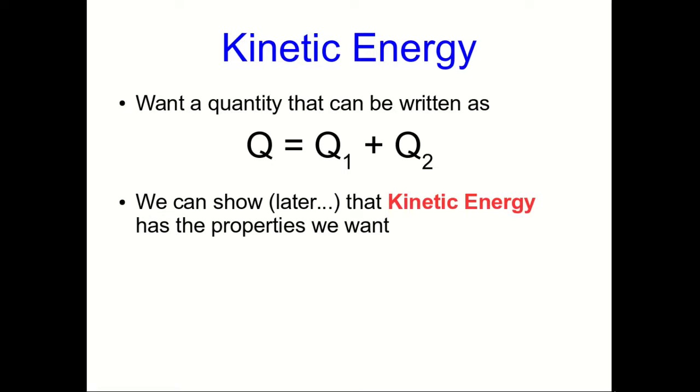Well, we're going to show later that this thing called kinetic energy has all the properties we want. I'm not going to prove that yet—we're just going to go and use it for a while and I'll prove it later. So here is the kinetic energy, and the point here is that this is the kinetic energy of an object. This K represents the kinetic energy of one object, and so when we're finding the kinetic energy of our system, we just add the kinetic energies of all the objects.